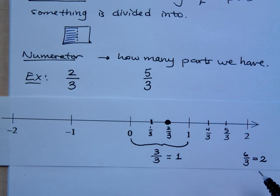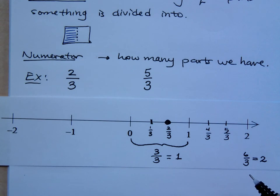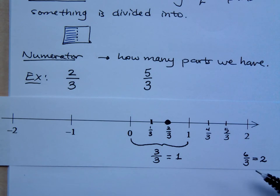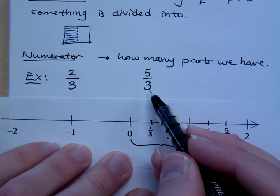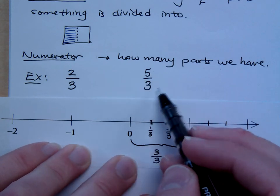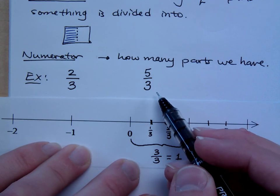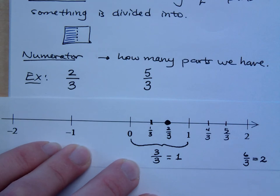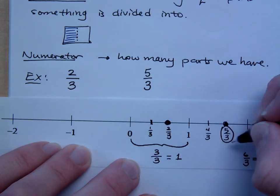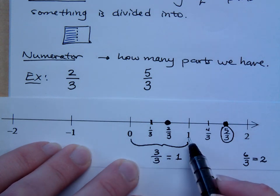Have you ever made goodie baskets for people? Maybe it's for a Valentine's party or Christmas — you've got three parts per bag. If I've got six things and each bag gets three, that's going to be two bags I can fill. What if I have five-thirds? That means I need three equal parts to make a whole unit. How many complete units can I make with five-thirds? You can make one whole unit and you're going to have two pieces left over. Five-thirds is right here on the number line — you have enough to make one whole unit and then you have two extra thirds.